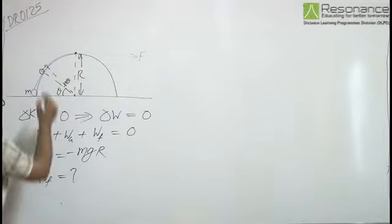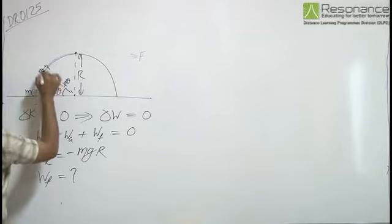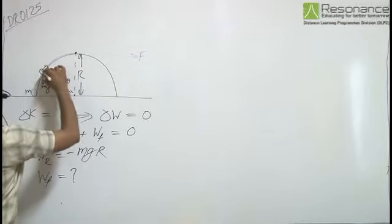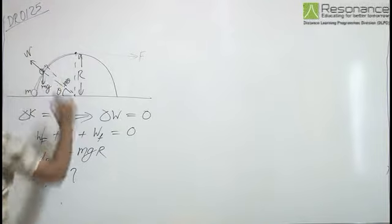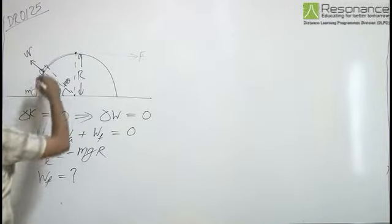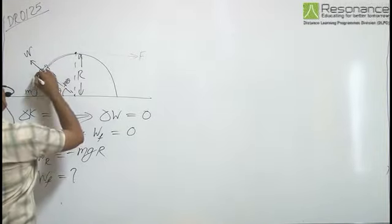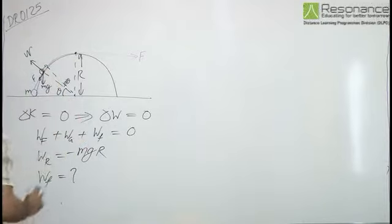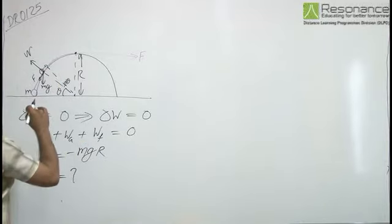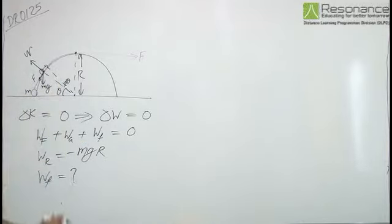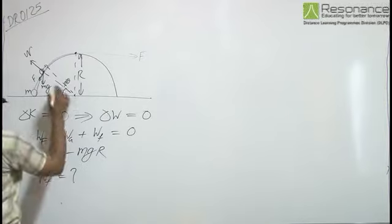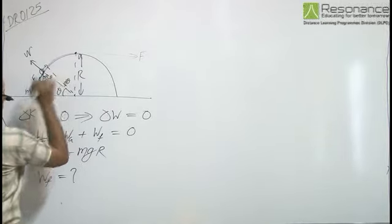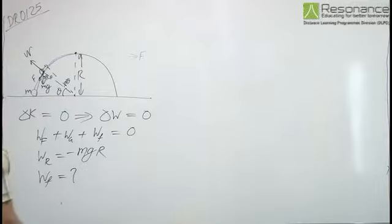In this particular situation, Mg is acting downward, N radially outward, and frictional force is acting tangentially downward as it is being pulled upward. Now as this particular angle is theta, this angle is 90 minus theta.